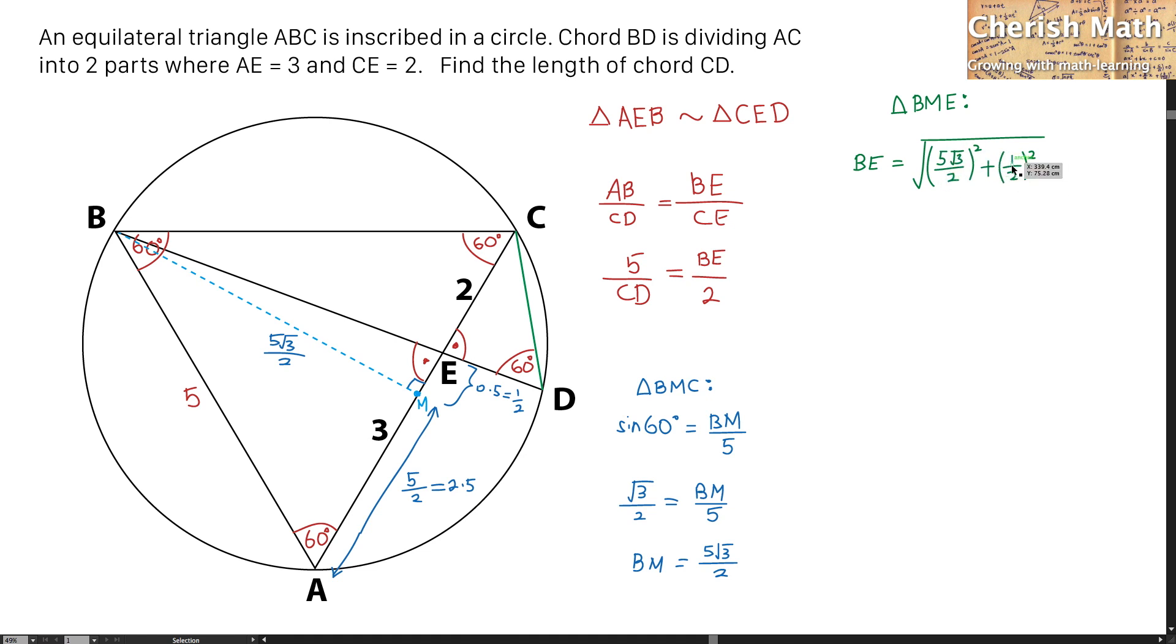To complete this, it is going to be the square root of 75 over 4 plus 1 over 4. The value of BE that I am getting here is the square root of 19.